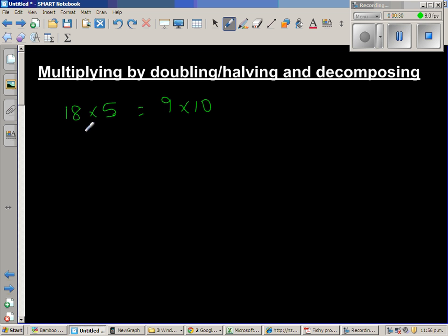So what I have done is I have halved this. This is half of 18 is 9. So if you halve 18, you have to double 10 to maintain the same proportion. So 18 times 5 is same as 9 times 10 which is 90.